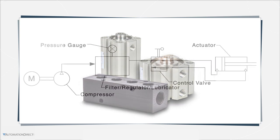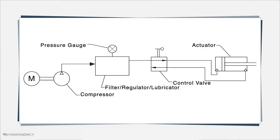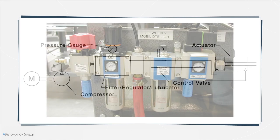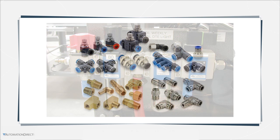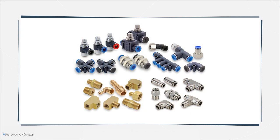Pneumatic actuators are at the working end of a fluid power system. Upstream of these units, which produce the visible work of a moving load, are compressors, filters, pressure regulators, lubricators, on-off control valves, and flow controls. Connecting all of these components together is a network of piping or tubing, either rigid or flexible, and fittings.